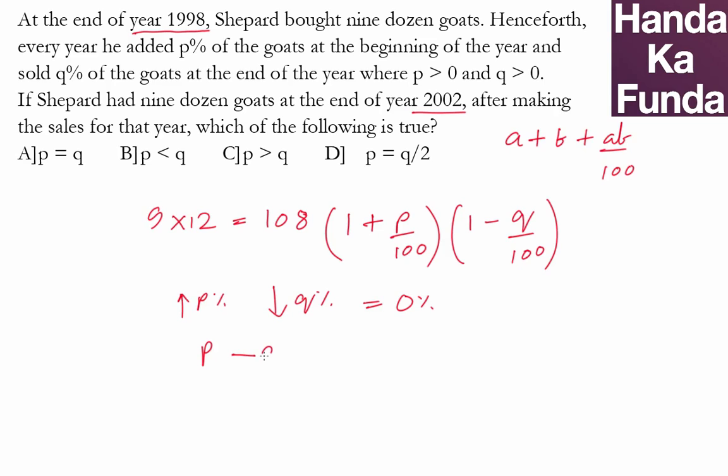So A is P, Q is a reduction, so minus Q minus PQ by 100 and this is equal to zero.